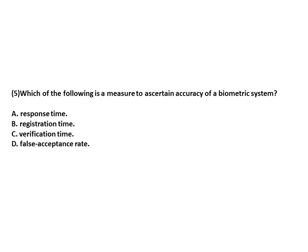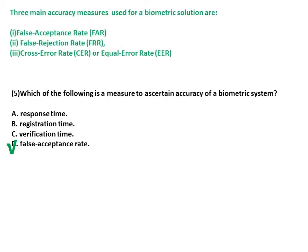Which of the following is a measure to ascertain the accuracy of a biometric system? The answer includes False Acceptance Rate, False Rejection Rate, and Cross Error Rate or Equal Error Rate — all three are accuracy measures for a biometric system.